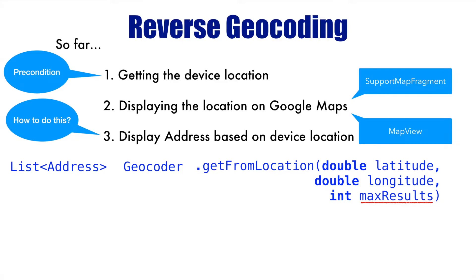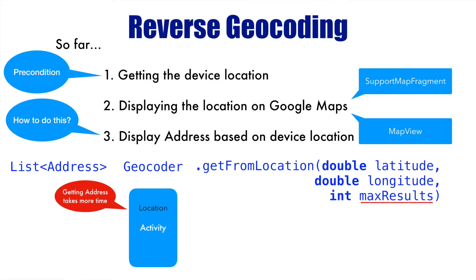You can specify one, two, three, or any number — the return will be a list with that many addresses. Now, in the activity where you get the location, you cannot call getFromLocation directly in the activity itself because it may take more time. The ideal situation is that this task should be moved to either a thread or an async task.